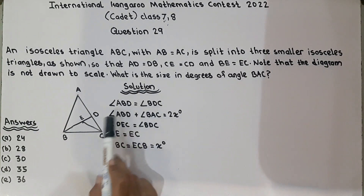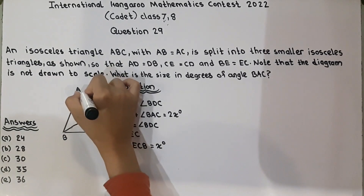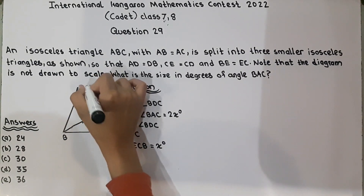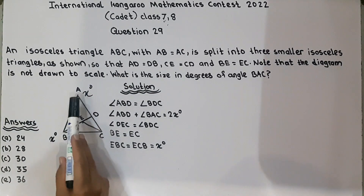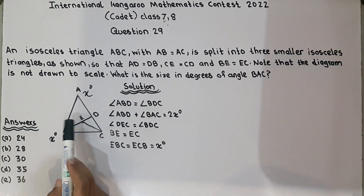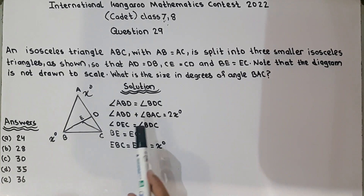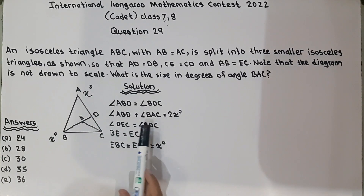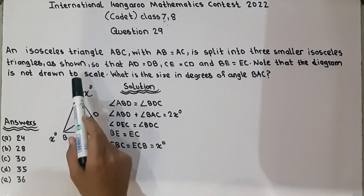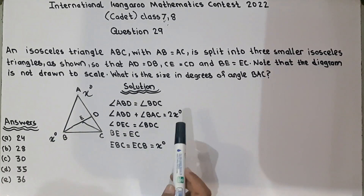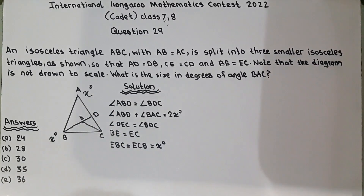So for triangle ABD, we can assign X degrees to the base angles. ABD is equal to BDC, and angle ABD plus angle BAC together gives us 2X degrees, because X degree plus X degree equals 2X degrees.